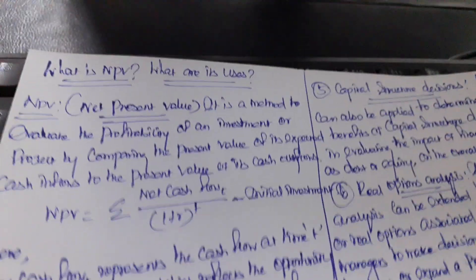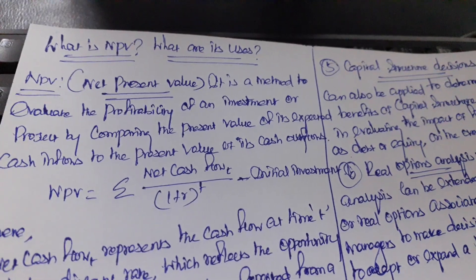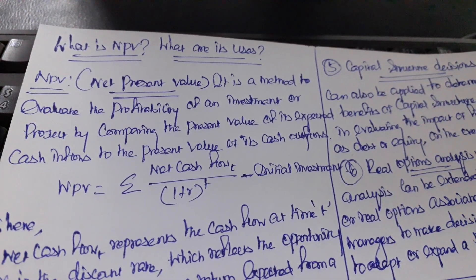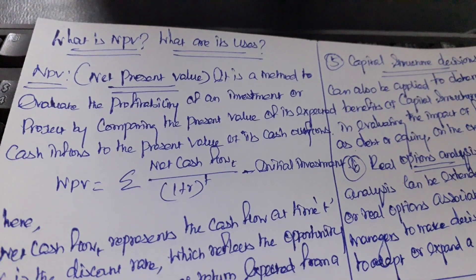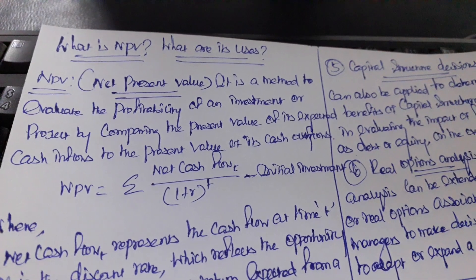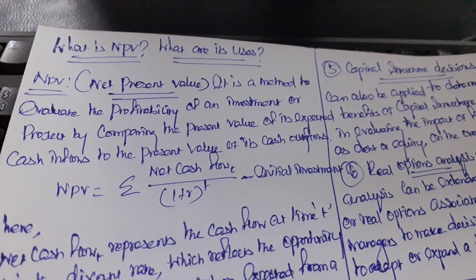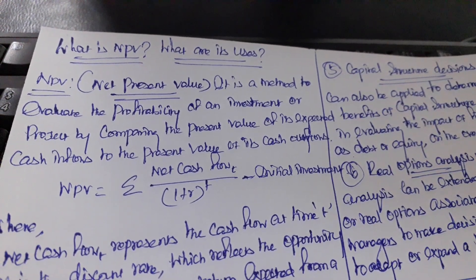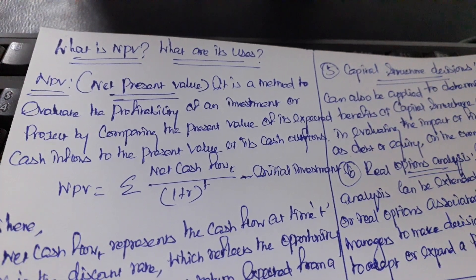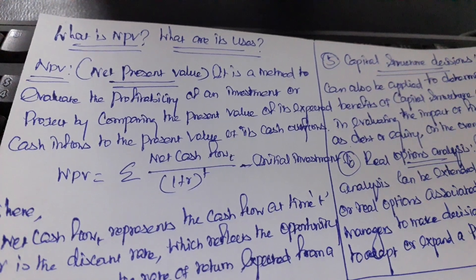Good evening. Today's topic is about what is NPV and its uses. NPV is an abbreviation of Net Present Value. It is a method to evaluate the profitability of an investment or a project by comparing the present value of its expected cash inflows to the present value of its cash outflows.